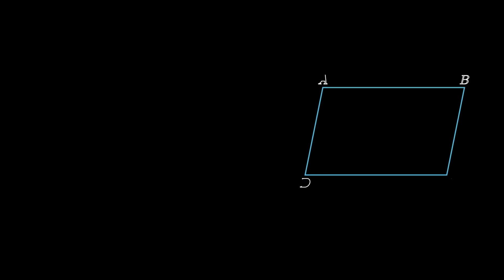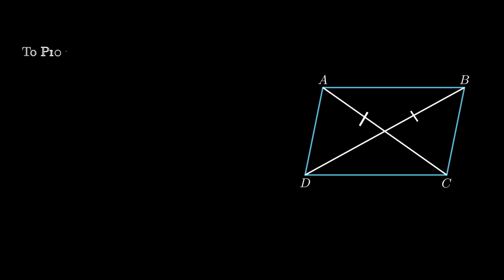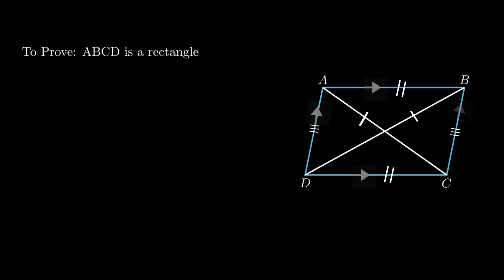The next problem states: if the diagonals of a parallelogram are equal, then show that it is a rectangle. Let ABCD be the required parallelogram such that side AB is equal and parallel to side CD, and side AD is equal and parallel to side BC. As the diagonals are equal, diagonal AC equals diagonal BD. We need to prove each vertex angle is 90 degrees.